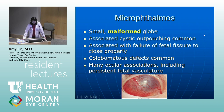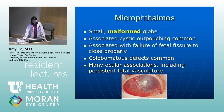Microphthalmos is perhaps a bit more common. This refers to a small malformed globe, and there can be an associated cyst or cystic outpouching. Microphthalmos is associated with a failure of the fetal fissure to close properly. Colobomatous defects are common. There are other ocular associations usually present, including persistent fetal vasculature, and there are a variety of causes — it can be autosomal dominant, recessive, associated with other systemic syndromes, or occur with TORCH infections.